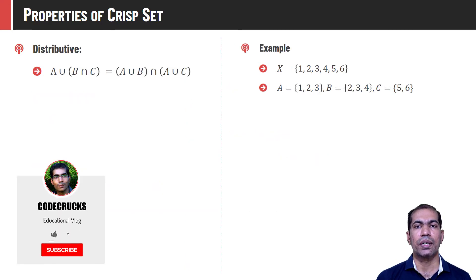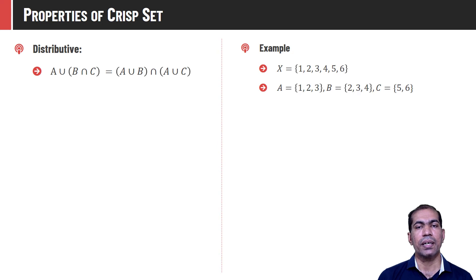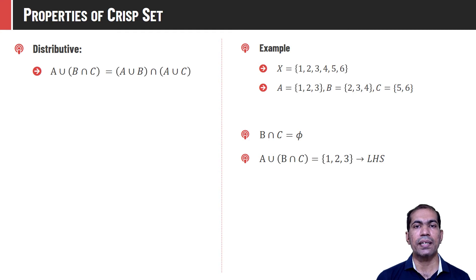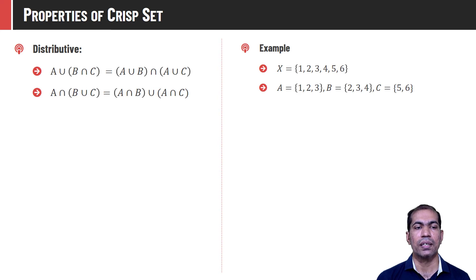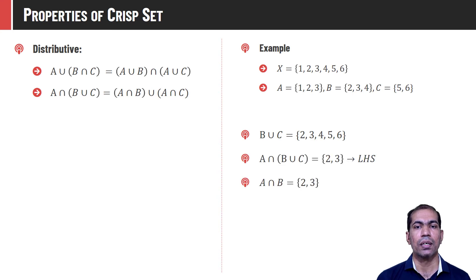Crisp sets also have the property of distributivity. That is, A union (B intersection C) is the same as (A union B) intersection (A union C). First we compute B intersection C, which is phi. Taking the union of that with set A gives set A itself. For the right-hand side, we compute A union B and A union C, and the intersection of those is {1, 2, 3}. Hence the distributive property is also true. It is also true for the other form: A intersection (B union C) equals (A intersection B) union (A intersection C).